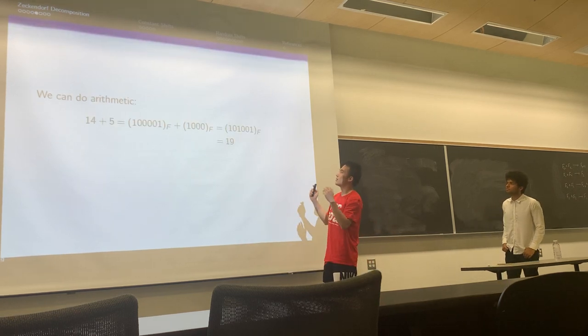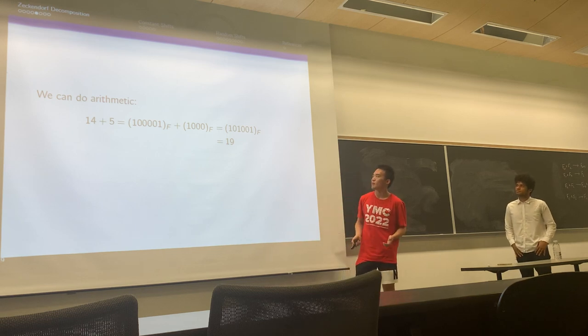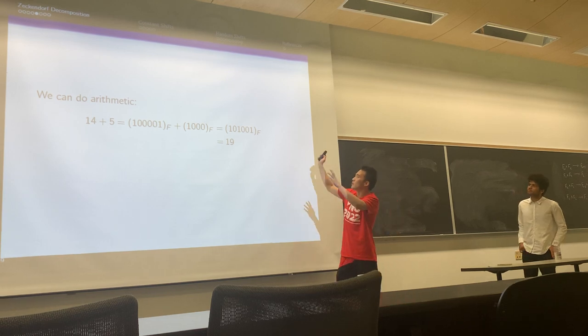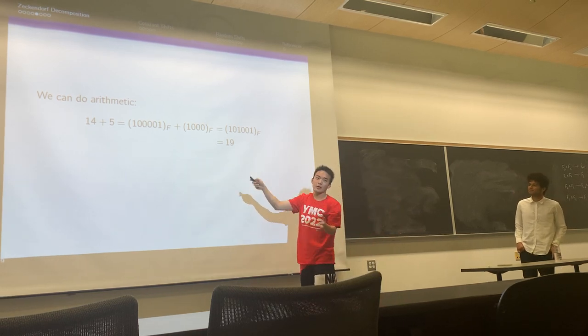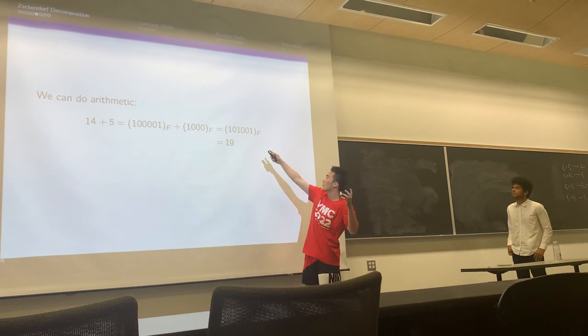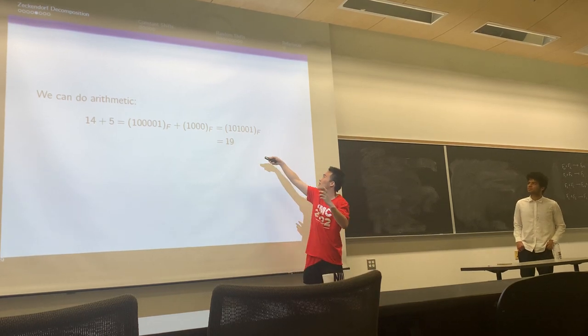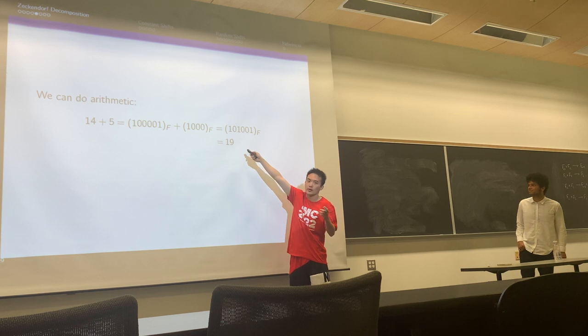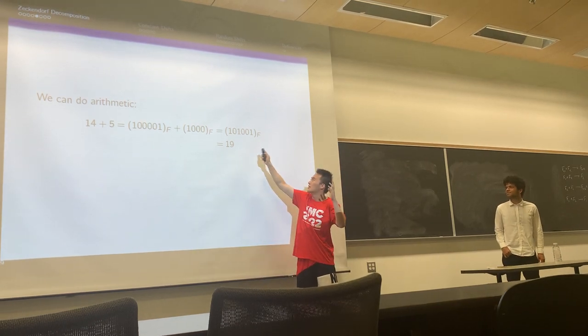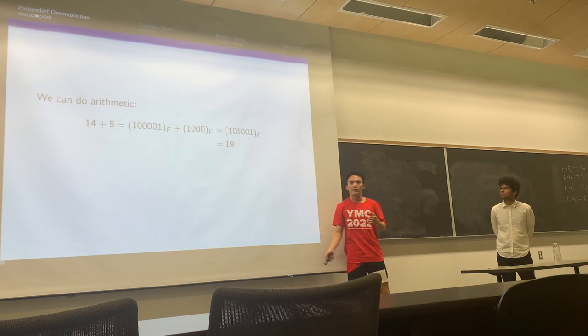We can do the arithmetic and hope we get some neat results. Let's add 14 with 5. You can see we first do Zeckendorf decomposition, the strings of zeros and ones, we add them together trivially, and it works fine. We check, zeros and ones in the string, no consecutive ones, so that works, and that's exactly the Zeckendorf decomposition of 19.